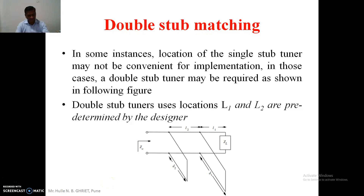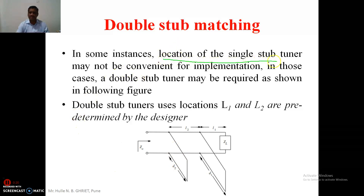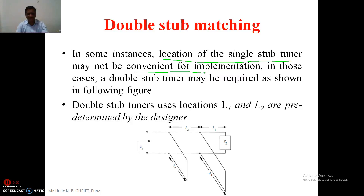Now some disadvantages exist for single stub matching — the location of the single stub is inconvenient in some cases for implementation; it may be at some odd location in between. That's why in such cases we prefer double stub matching.